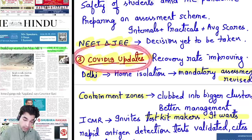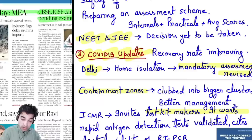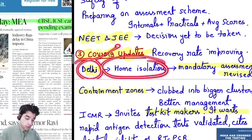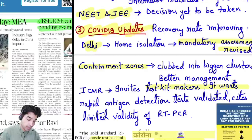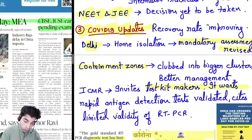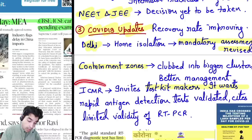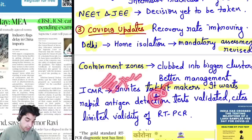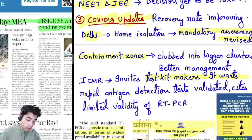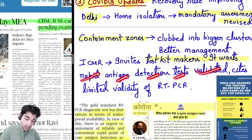COVID-19 updates: the recovery rate is improving — patients who had the infection are getting better. In Delhi, home isolation guidelines are being revised. Containment zones where infection is high are being clubbed into bigger clusters for better management. ICMR is doing very well — great infographics on Twitter. ICMR has invited test kit makers and wants a rapid antigen detection test validated.